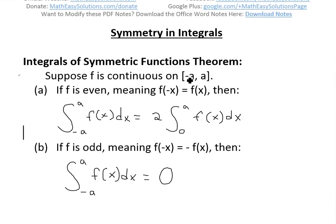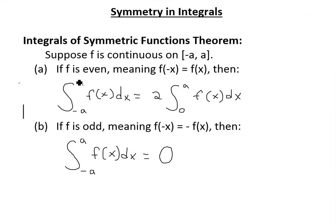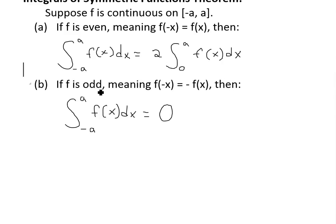Suppose the function f is continuous on the closed interval negative a to a — meaning this function exists at negative a and a. If f is an even function, meaning f of negative x equals f of x, then the integral from negative a to a of f(x) dx equals two times the integral from zero to a of f(x) dx. But in the case of an odd function, meaning f of negative x equals negative f of x, then the integral from negative a to a of f(x) dx cancels out and becomes zero.